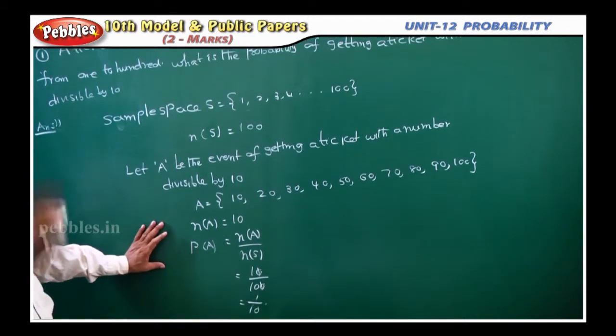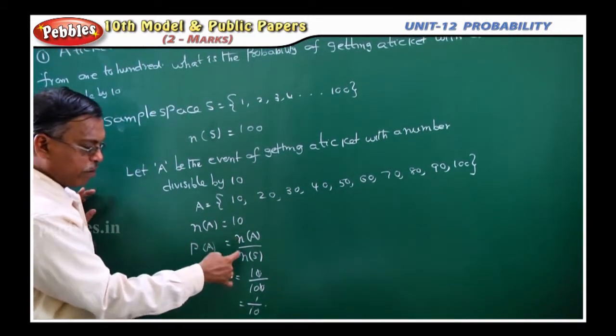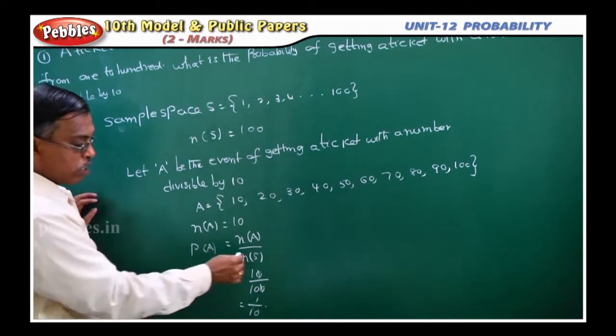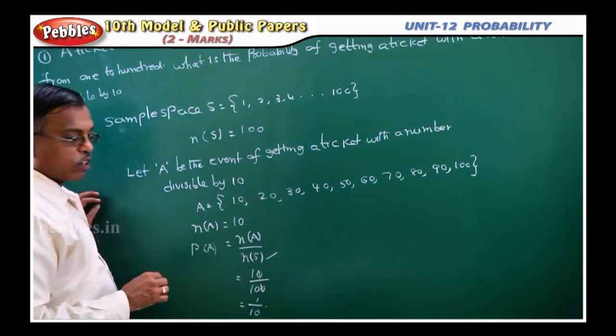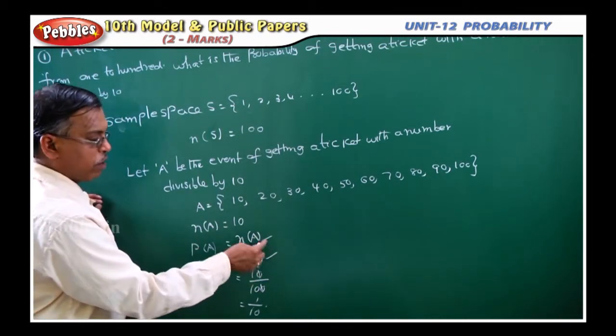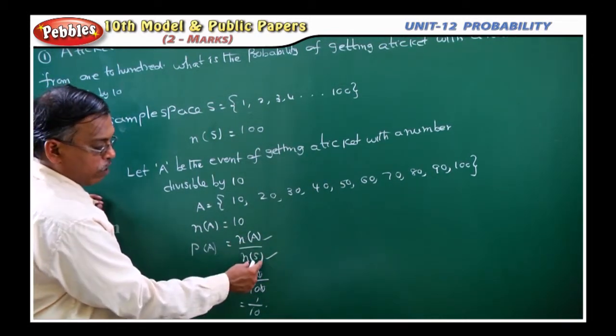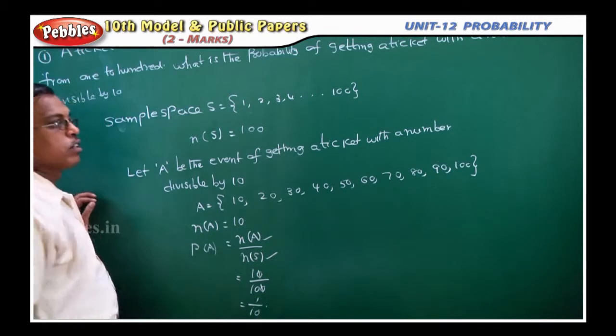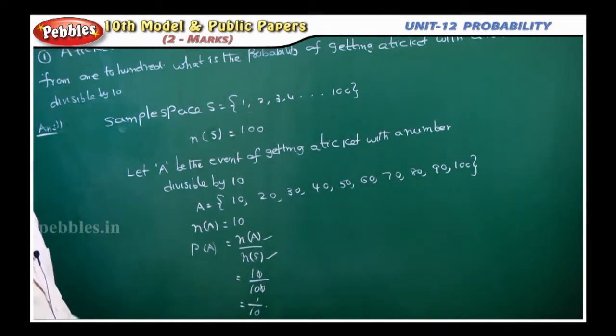Probability always you should remember N of A by N of S formula. This is the total number of outcomes. These are the number of favorable outcomes. So, if you divide number of favorable outcomes by total number of outcomes you will get the required probability. That is it, very simple.